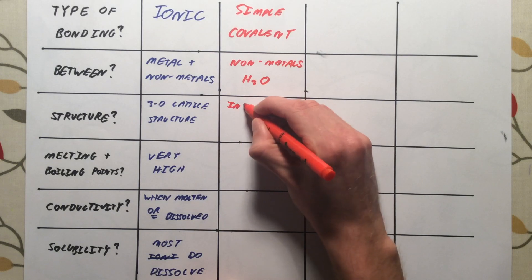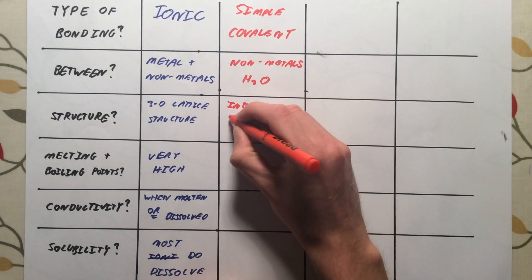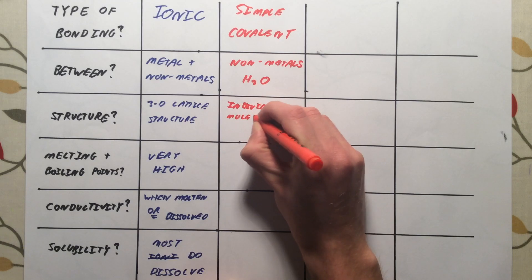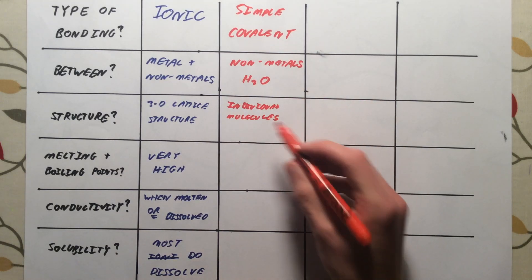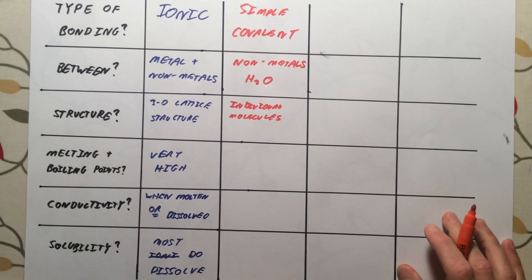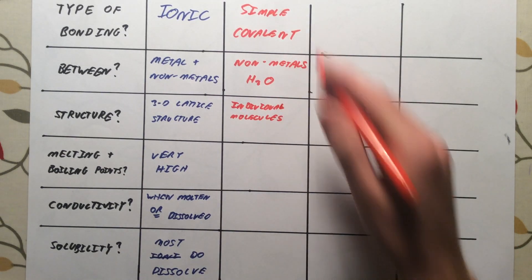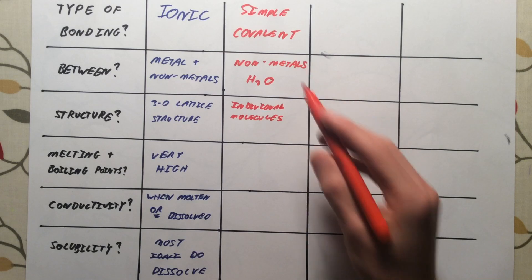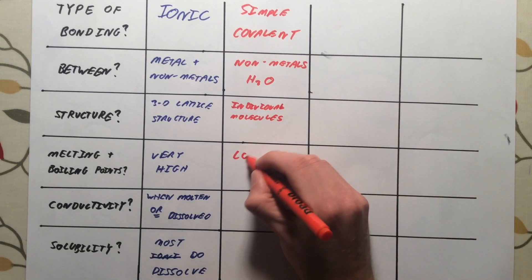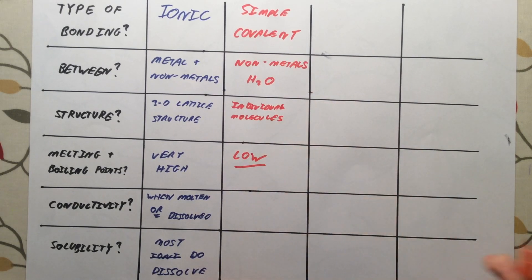The structure of these, we have individual molecules. And between those molecules, we had very weak intermolecular forces. In order to melt or boil a simple covalent compound, all we need to do is overcome those weak intermolecular forces. So generally, simple covalent compounds have low melting and boiling points.